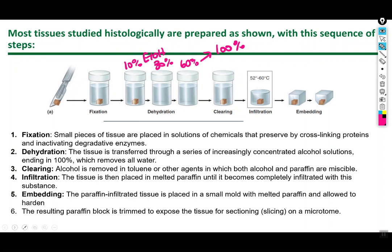After dehydration, you need to remove the alcohol too, using solvents like toluene. Toluene is a very good solvent present in nail polish, enamel paints, and varnish — it's a volatile compound that evaporates, leaving a shiny coating behind. That property also makes it good for carrying alcohol away from the tissue, which is why it's used in tissue clearing.